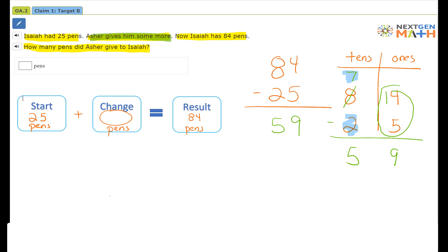So 84 minus 25 is 59, and that's the number of pins Asher gave to Isaiah. So back to our problem: Isaiah had 25 pins, Asher gives him some more—we figured out that was 59—now Isaiah has 84 pins.